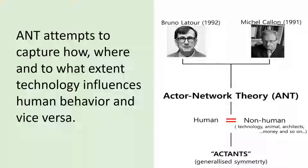Two of the most prominent thinkers in the 1990s were Bruno Latour and Michel Callon, both working in the French-speaking world. John Law was a third person famously associated with ANT in the early days. Here we see the equation of human activity and non-human actors, which includes technology, architecture, and so on. Actor network theory breaks down the ontological differences between these different spheres, arguing that we shouldn't take human actors to be different from non-human actors when looking at how they combine and form networks.